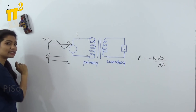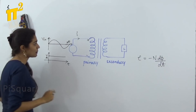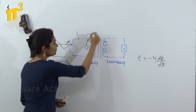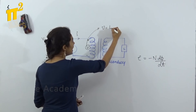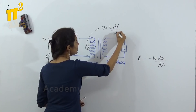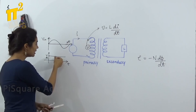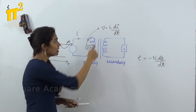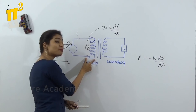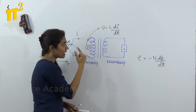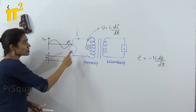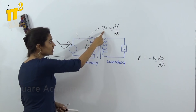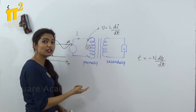Now what will happen when I give a DC supply? A DC supply means a stationary field. The voltage V is L × dI/dt. Now you can see that the rate of change of current is zero. So the voltage that will be induced across the primary coil is zero. The rate of change of current is zero with the DC supply, and hence the voltage induced across the coil is also zero.